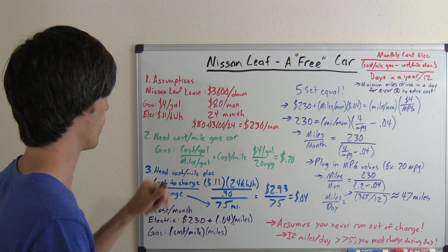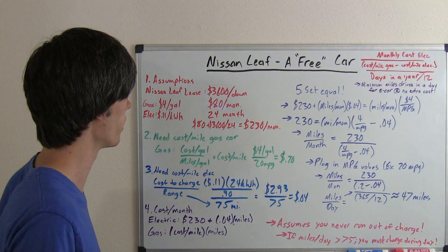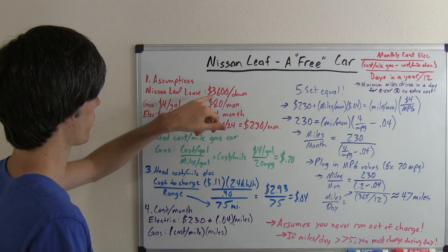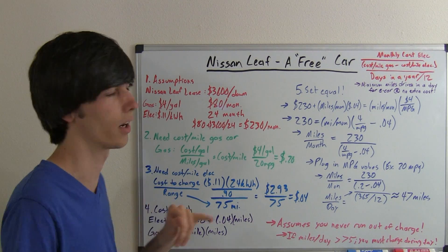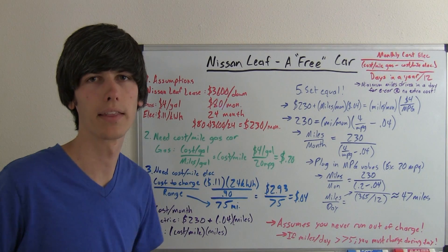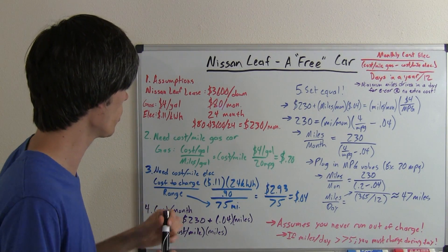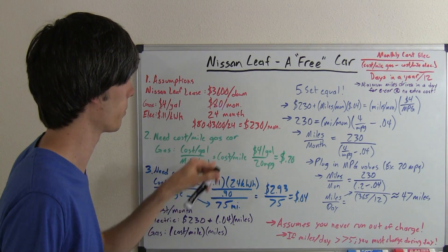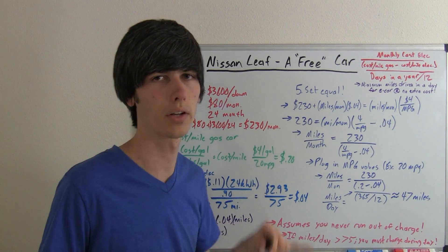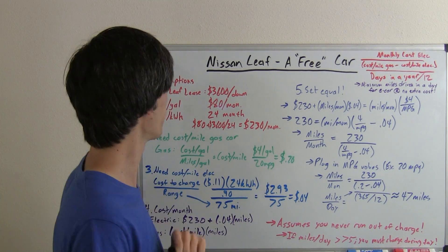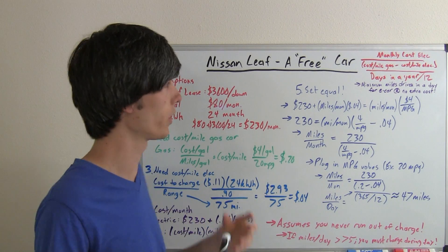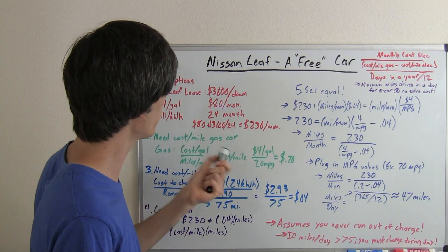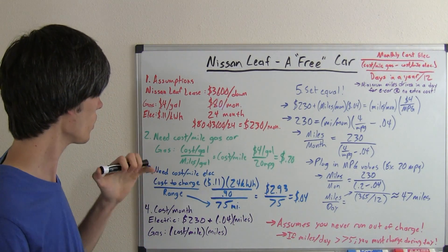First off our assumptions, step one. A Nissan Leaf, I looked up some prices around the area and I didn't go with the lowest possible price but a reasonable price. We've got $3,600 down and $80 a month and this lease is for 24 months. So if you do 80 plus 3600 divided by 24 to get that into a monthly payment, this is going to be a total cost of $230 per month. Now this is the Nissan Leaf SV, the middle class one, so it is going to be a little bit more expensive than the cheapest version, which means at the end of the day you could do even better than what I described in this video.